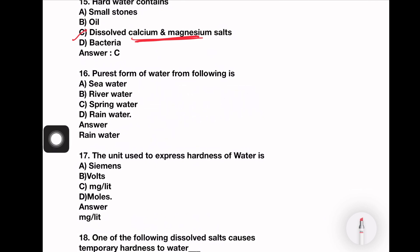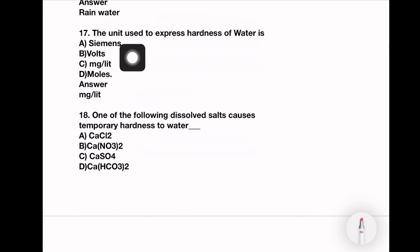The purest form of water from following is sea water, river water, spring water, or rain water. The purest form of water is rain water. Next question. The unit used to express the hardness of water is siemens, volts, mg per liter, or moles. So what is it? Mg per liter, ppm, degree French, Clark degree, or German degree.